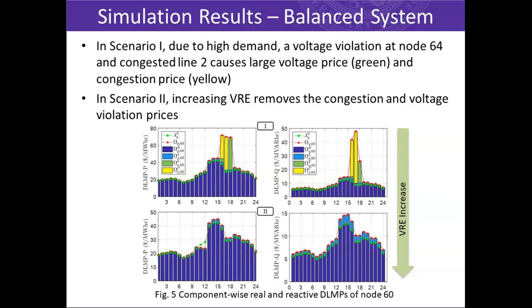In scenario one, due to high demand, a voltage violation occurs at node 64 and congestion on line two occurs. This causes the voltage component in green and congestion component in yellow to appear during time periods 16 to 18. These values represent the per-unit price incurred at node 60, because a unit increase in real and reactive power consumption at that node will increase voltage violation and power flow congestion. Loss components are inherent and appear in all time slots. In scenario two, we add a small penetration of VRE, and the congestion prices and voltage violation prices during hours 16 to 18 completely vanish.